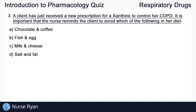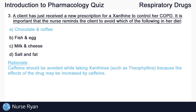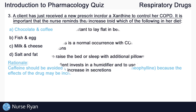Moving on to question number three. A client just received a new prescription for a xanthine to control her COPD. It is important that the nurse reminds the client to avoid which of the following in her diet. The answer here is A, chocolate and coffee. Caffeine should be avoided while taking xanthines, such as theophylline, because the effects of the drug may be increased by caffeine.